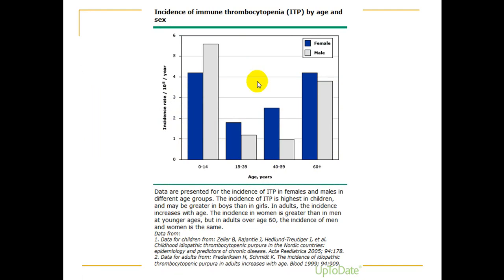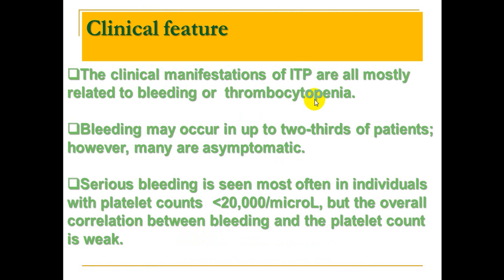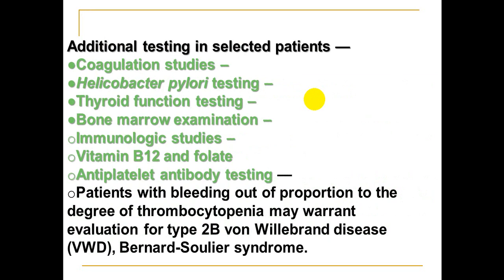ITP is a disease mainly of the pediatric age group in males, and mainly in elderly females. Clinical features depend on platelet count, but the count is variable from person to person. A patient could have a platelet count of 60 and have bleeding, while another patient with a count of 20 may have no bleeding.